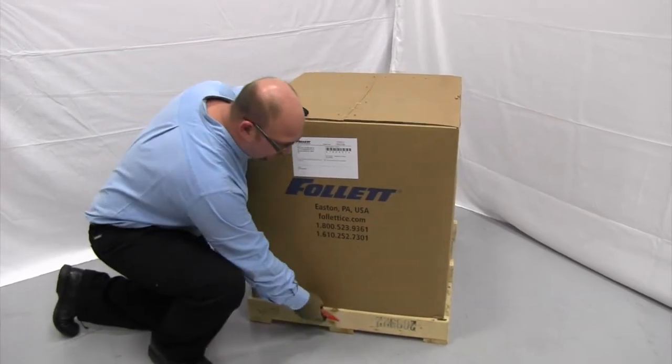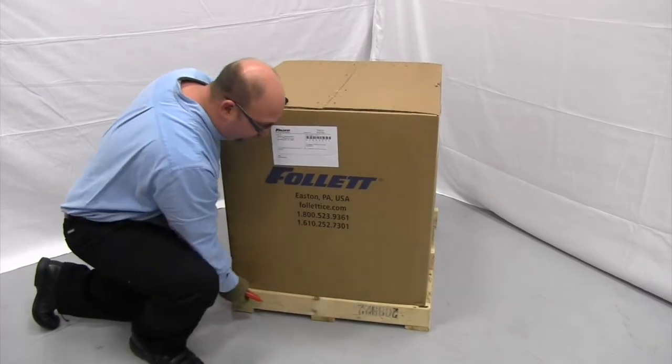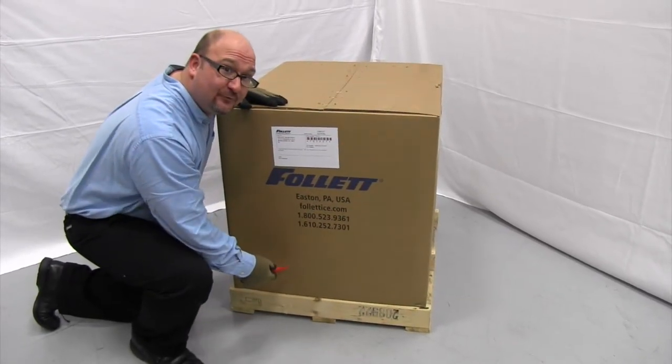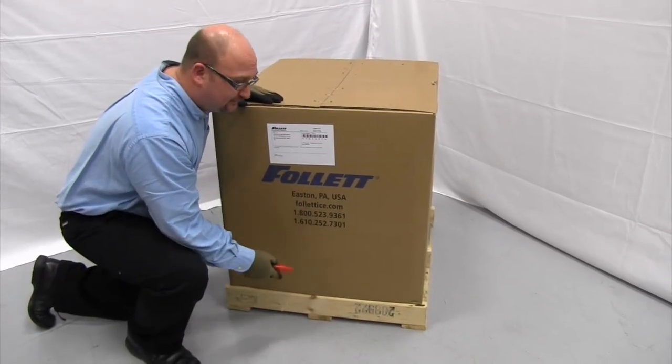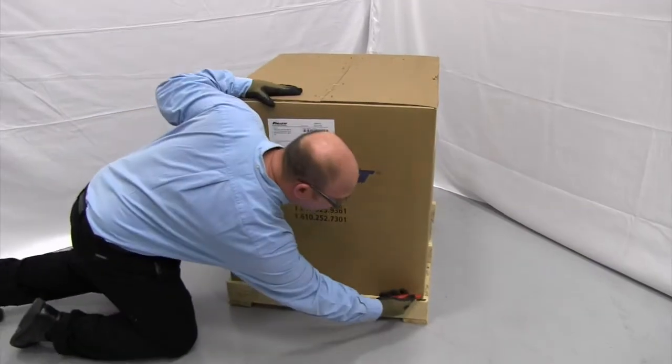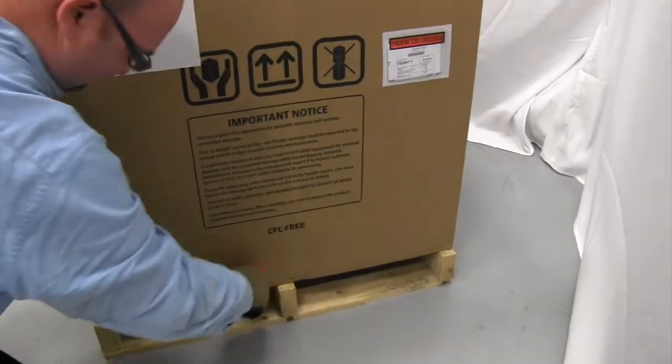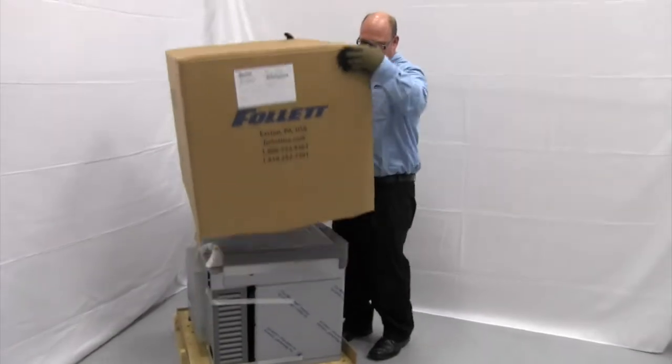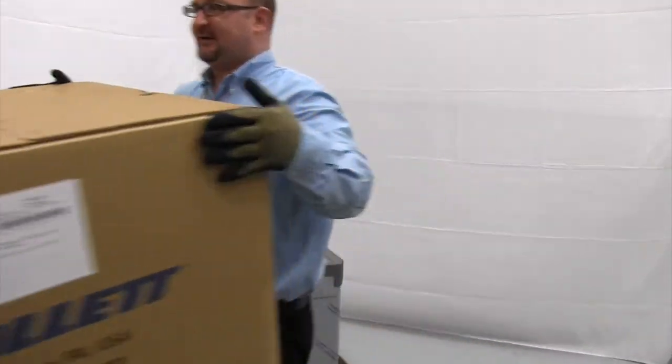The cardboard box is attached to the pallet by staples. The quickest way to get the box off the pallet is going to be to go ahead and cut it with a razor knife. You can remove the box and set that aside.